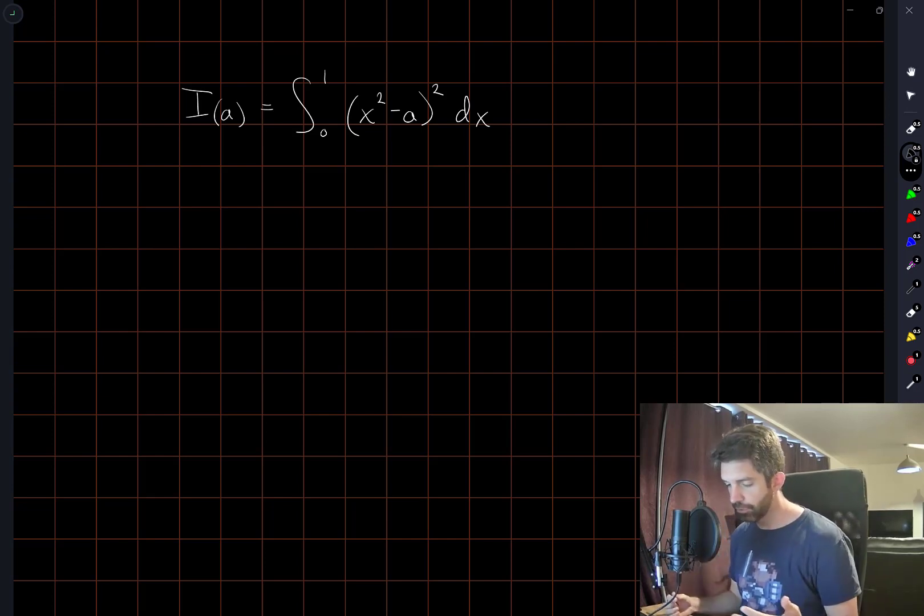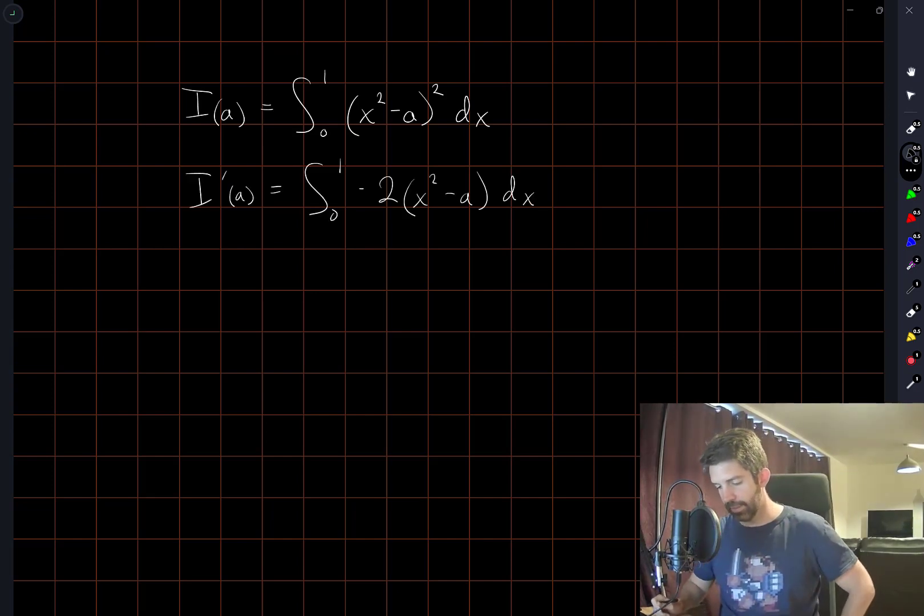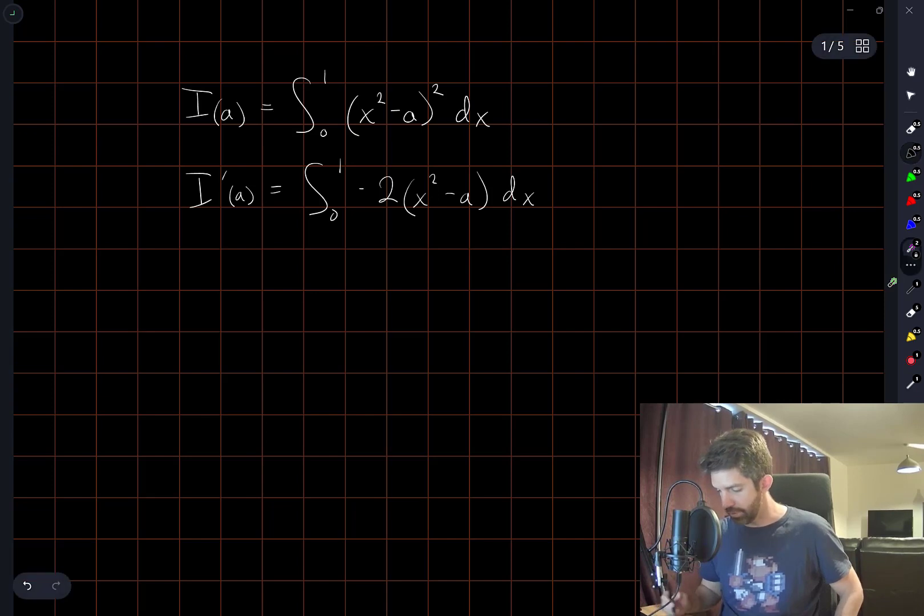I don't know exactly how things are going to end up working out but let's just see. So this is the derivative of the function I. I've simply taken the derivative of the integrand with respect to a so the exponent 2 comes down in front and by chain rule we're multiplying by negative 1.